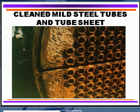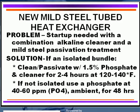So keep in mind you need to passivate this type of thing. For a brand new heat exchanger made of carbon steel tubing, remove the oils and greases with a cleaner, then use a mild steel passivation. If you have an isolated bundle, you can do this very rapidly — we have done that with a solution of 1.5% phosphate and cleaner for two to four hours at 120 to 140 degrees Fahrenheit, and it does an excellent job.